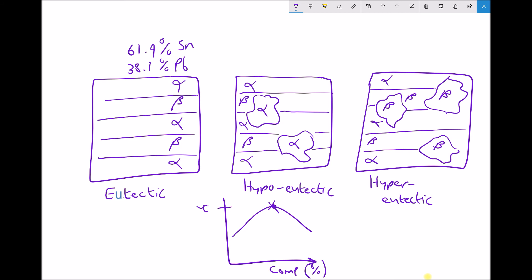The other advantage of that composition, as we saw, is that it will have the lowest melting temperature. It will go directly from solid to liquid at the lowest temperature of 183 degrees C.